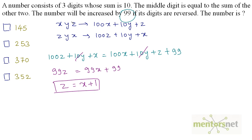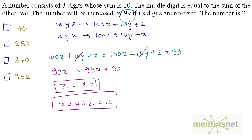The three-digit number x, y, z has digits whose sum is 10, so x plus y plus z equals 10. We are also given that the middle digit equals the sum of the other two, so y equals x plus z. We now have three equations and three variables.